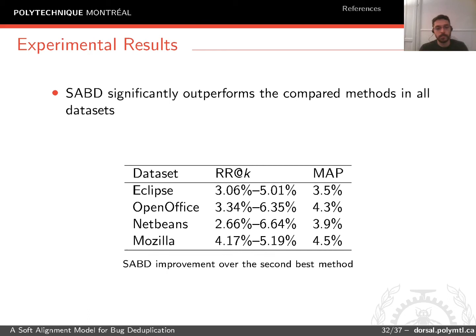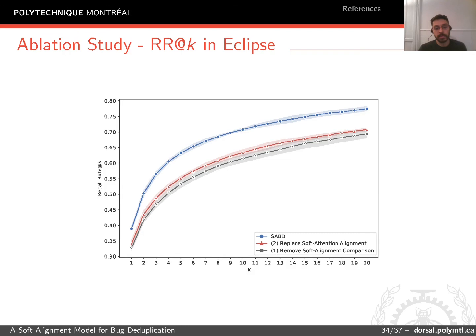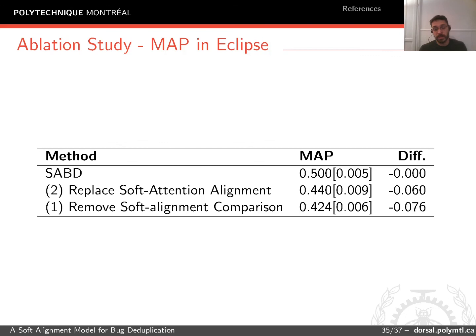We also performed an ablation study to assess whether our soft-alignment mechanism is important. First, we removed the soft alignment comparison to see how performance is affected. We also replaced the soft-attention alignment with a mechanism similar to PODR. When the soft-attention alignment comparison is removed, it negatively affects the performance of the model, and the same occurs when it is replaced. Using MAP metric, we observe the same results.